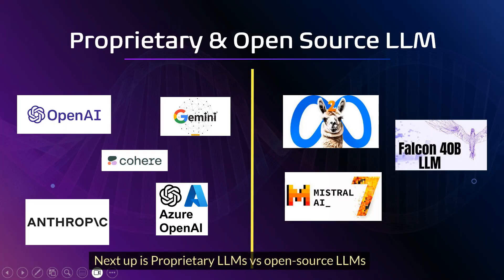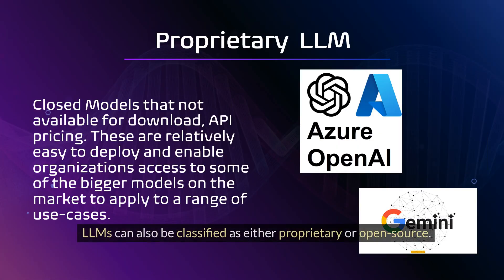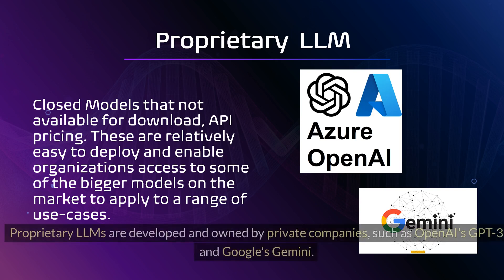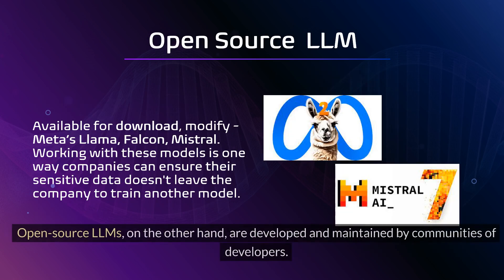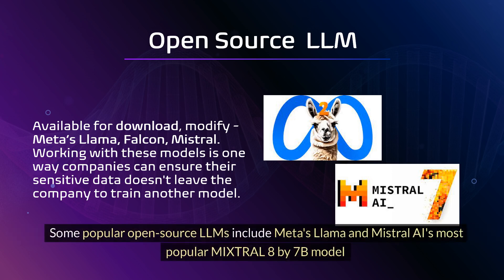Next up is proprietary LLMs versus open-source LLMs. LLMs can be classified as either proprietary or open-source. Proprietary LLMs are developed and owned by private companies, such as OpenAI's GPT-3 and Google's Gemini. Open-source LLMs, on the other hand, are developed and maintained by communities of developers. Some popular open-source LLMs include Meta's Llama and Mistral AI's most popular Mixtral 8x7b model.